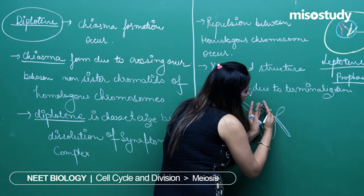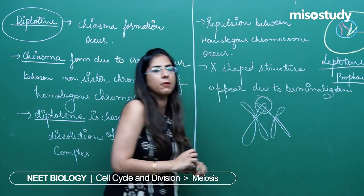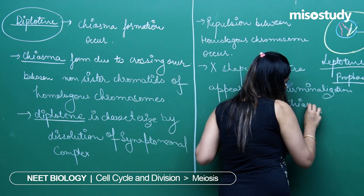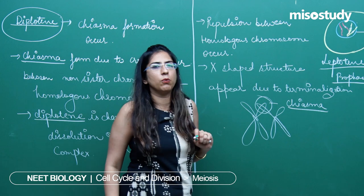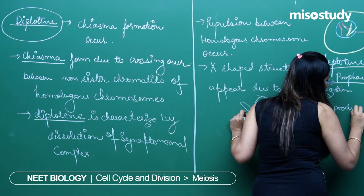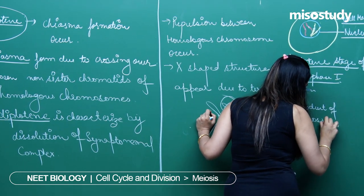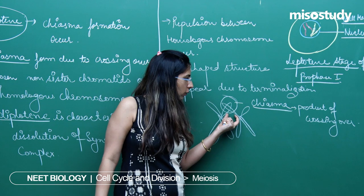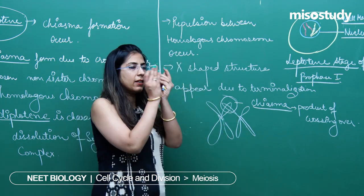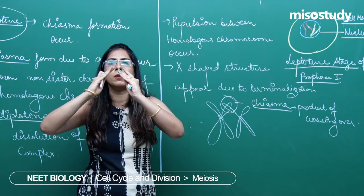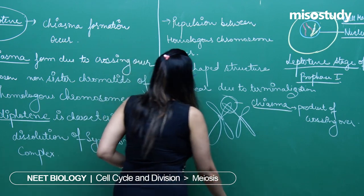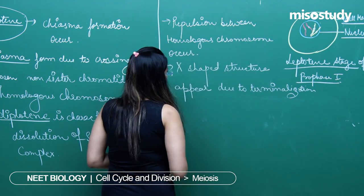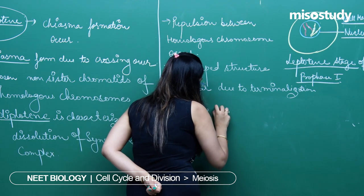Looking at this structure: these are two chromosomes and the repulsion between them occurs. Initially they are very close to each other, but as they segregate, the X-shaped structure becomes visible and this X-shaped structure is called chiasma. Chiasma is a product of crossing over. Initially the crossing over had taken place but was not visible; during this stage, when repulsion occurs, the X-shaped structure becomes clearly visible.